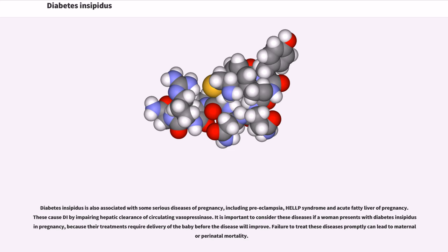Diabetes insipidus is also associated with some serious diseases of pregnancy, including preeclampsia, HELLP syndrome and acute fatty liver of pregnancy. These cause DI by impairing hepatic clearance of circulating vasopressinase. It is important to consider these diseases if a woman presents with diabetes insipidus and pregnancy, because their treatments require delivery of the baby before the disease will improve. Failure to treat these diseases promptly can lead to maternal or perinatal mortality.